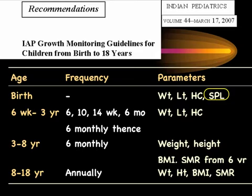One very important parameter at birth is stretched penile length, measured using a transparent scale placed at the pubic symphysis, with the prepuce retracted and penis stretched to maximum resistance. This is important as it can be a marker for micropenis, defined as stretched penile length less than 1.8 centimeters, which may indicate endocrine pathology like hypopituitarism predisposing to hypoglycemic seizures. Disorders of sexual differentiation would also be identified by measuring stretched penile length.